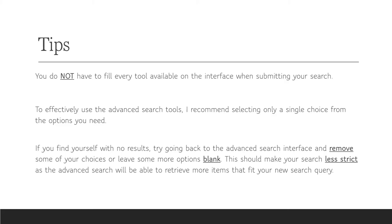To effectively use the advanced search tools, I recommend selecting only a single choice from the options you need. If you find yourself with no results, try going back to the advanced search interface and remove some of your choices or leave some options blank. This should make your search less strict, allowing the advanced search to retrieve more items that fit your new search query.